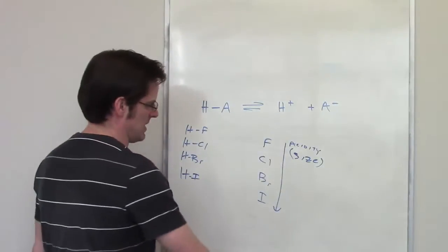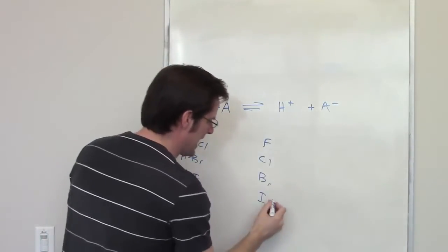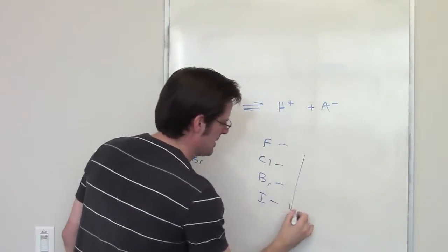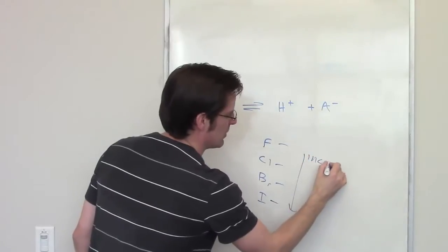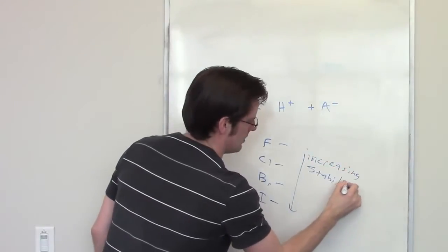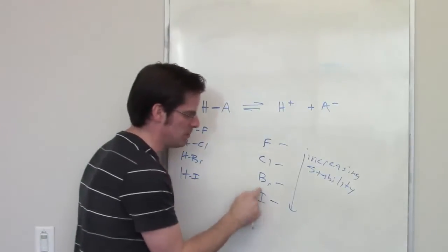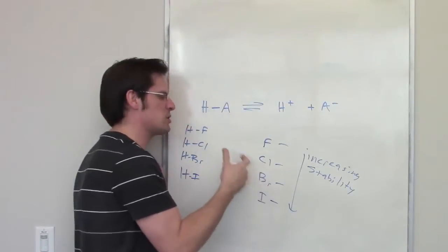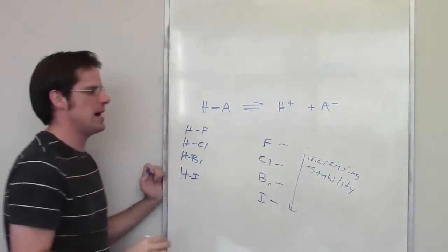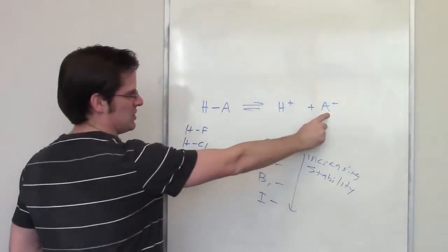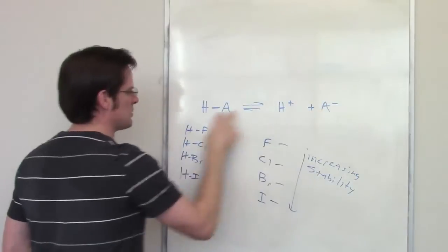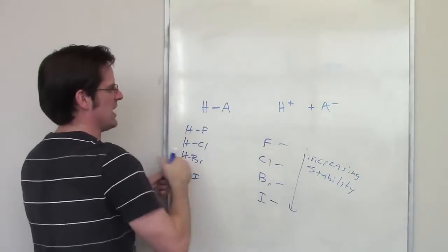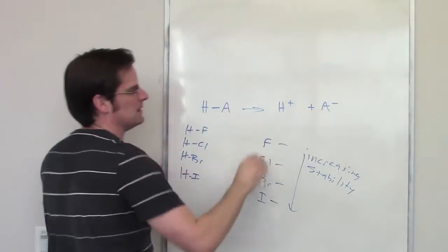So, what that tells me, then, is that I- must be more stable. So, I'll go ahead and write down increasing stability. Once again, I- must be more stable than Br-, which must be more stable than Cl-, which must be more stable than F-. So, if I've got an I- here, that's really stable, which means that HI is going to be wicked acidic and just go, wha-bam, and form I-.